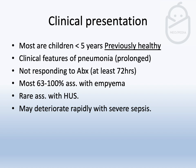The clinical presentation shows features of pneumonia — a prolonged pneumonia not responding to antibiotic therapy for 72 hours — mainly affecting children less than five years. In up to 100% of cases it can be associated with empyema. Some Taiwanese studies showed rare association with hemolytic uremic syndrome. A key clinical feature is that there can be rapid deterioration even over 24 hours, with severe sepsis.